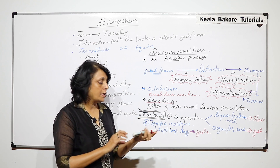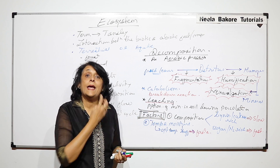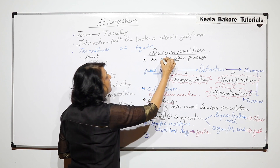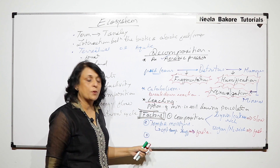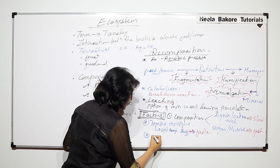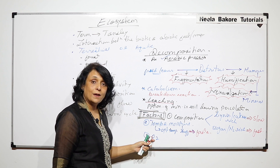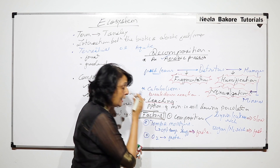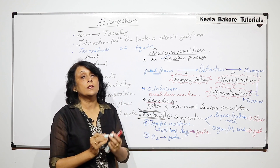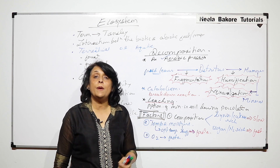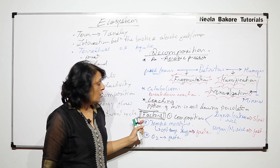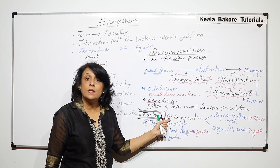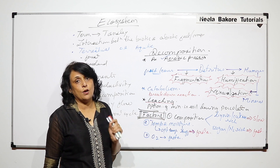The third factor is that decomposition is an aerobic process. If oxygen is available, the rate of decomposition is faster. In the absence of oxygen, the decomposition process will be slow. So temperature, moisture, and oxygen availability are the key factors deciding the rate of decomposition.